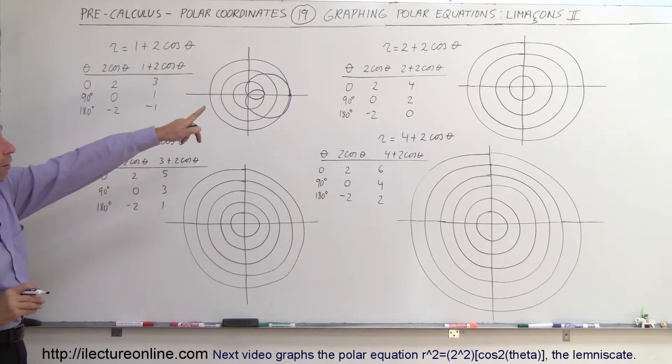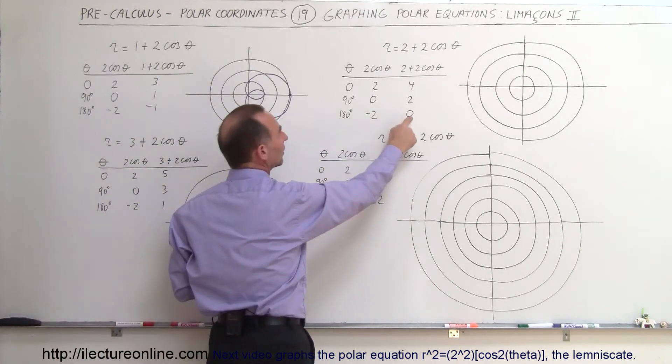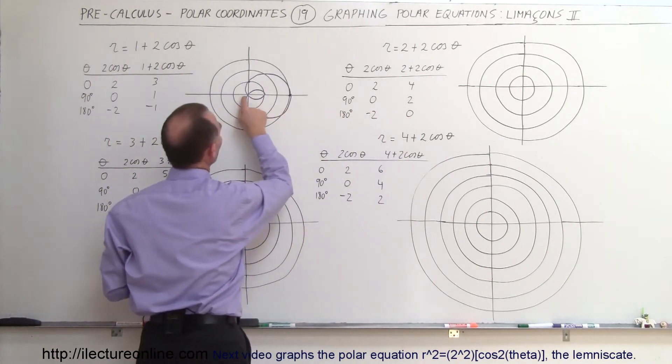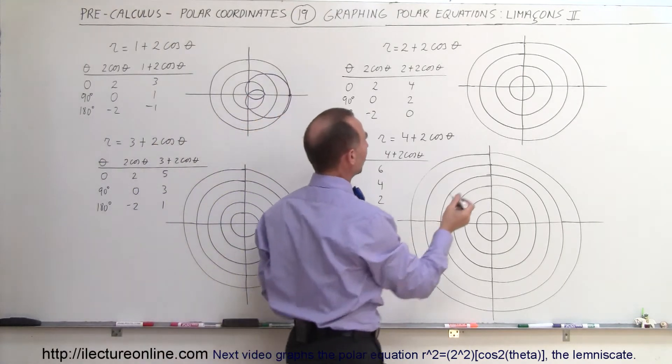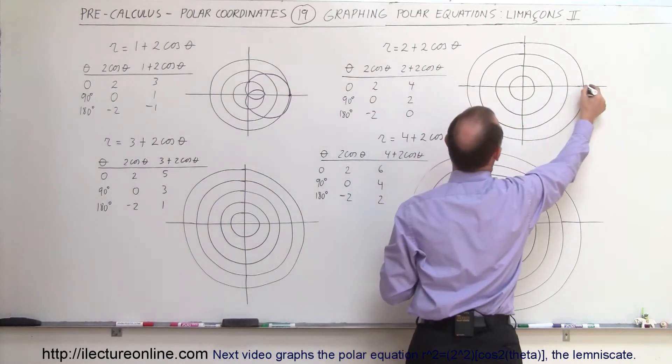But what happens now when we have r equals 2 plus 2 times the cosine of theta? Notice that at 180 degrees the total value is 0, so instead of coming all the way back here and making that little loop, it goes back to the 0 point right there. So what that means is that at 0 degrees we're at 4.